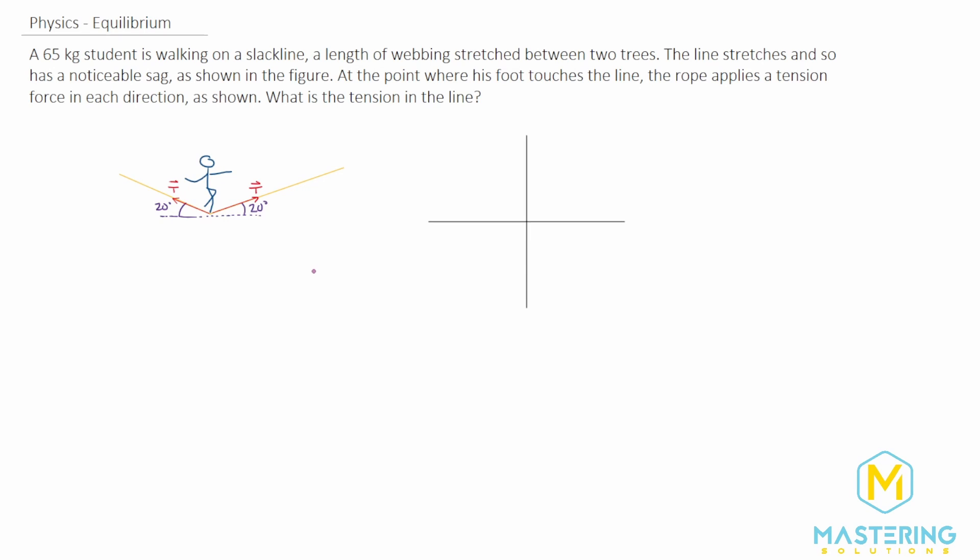Welcome to Mastering Solutions. This is another equilibrium problem where we have a 65 kilogram student walking on a slack line. The line has a sag as we see in the picture, and at the point where the foot touches the slack line